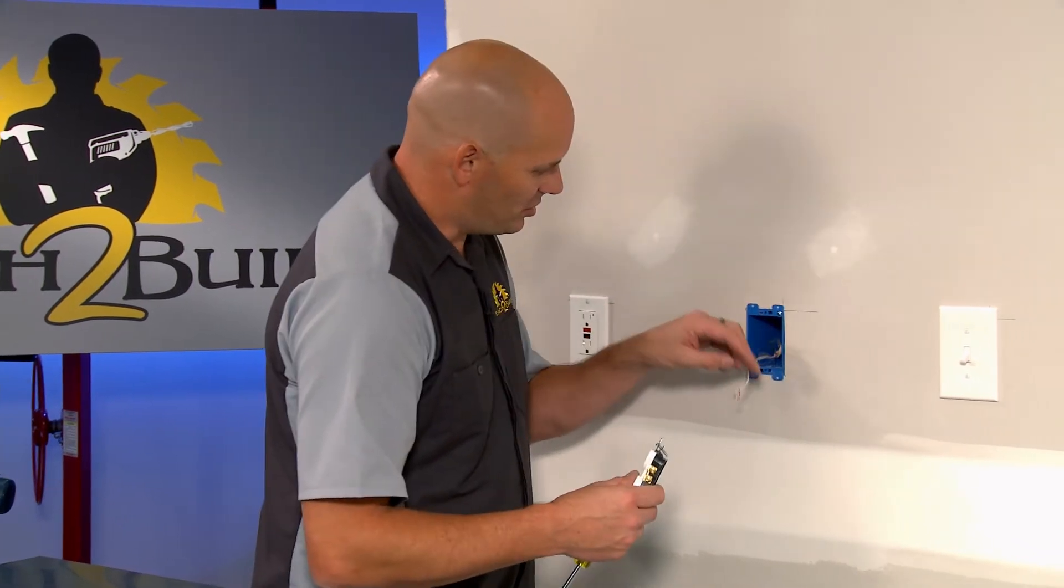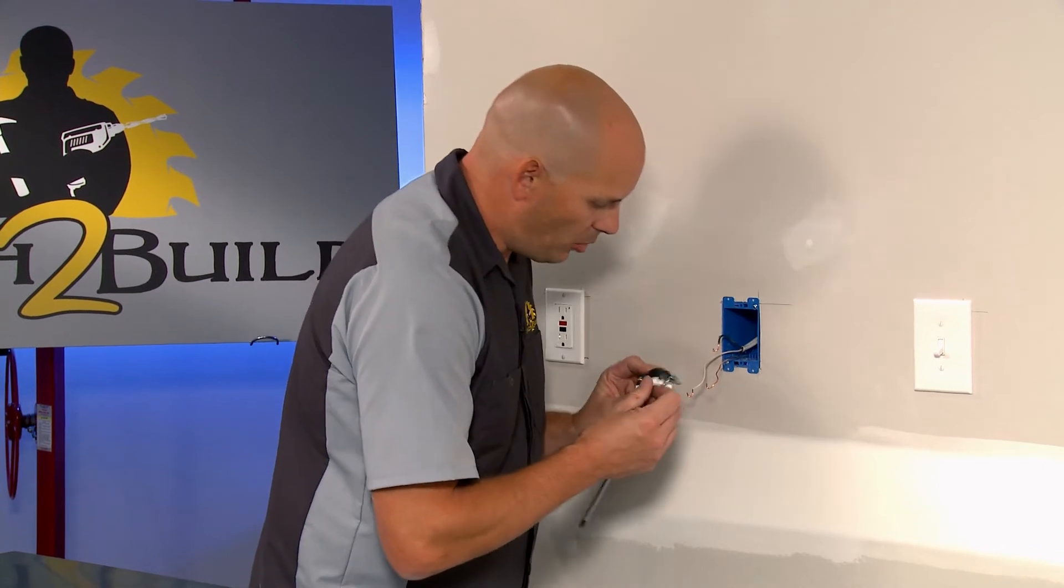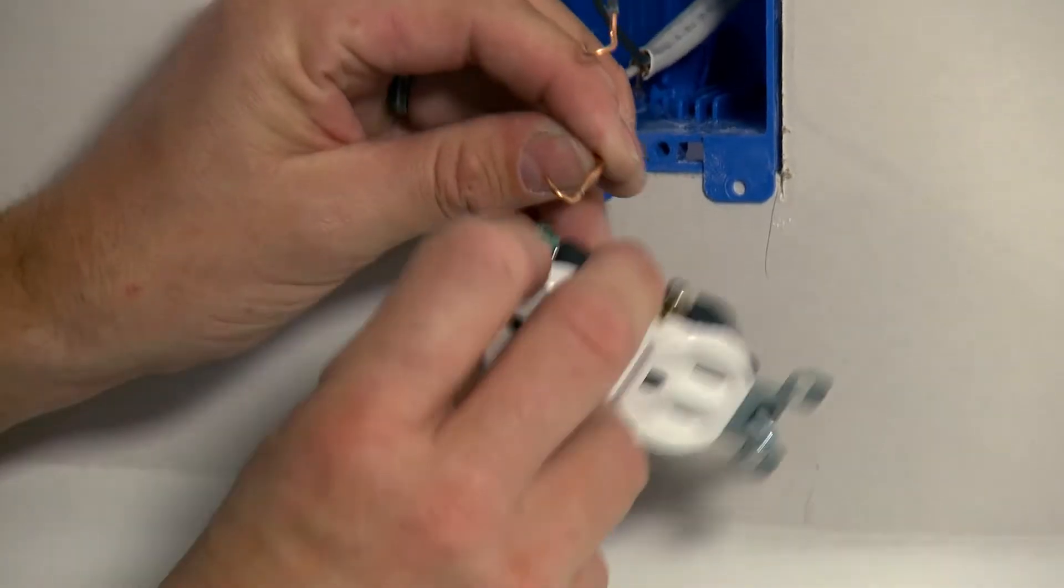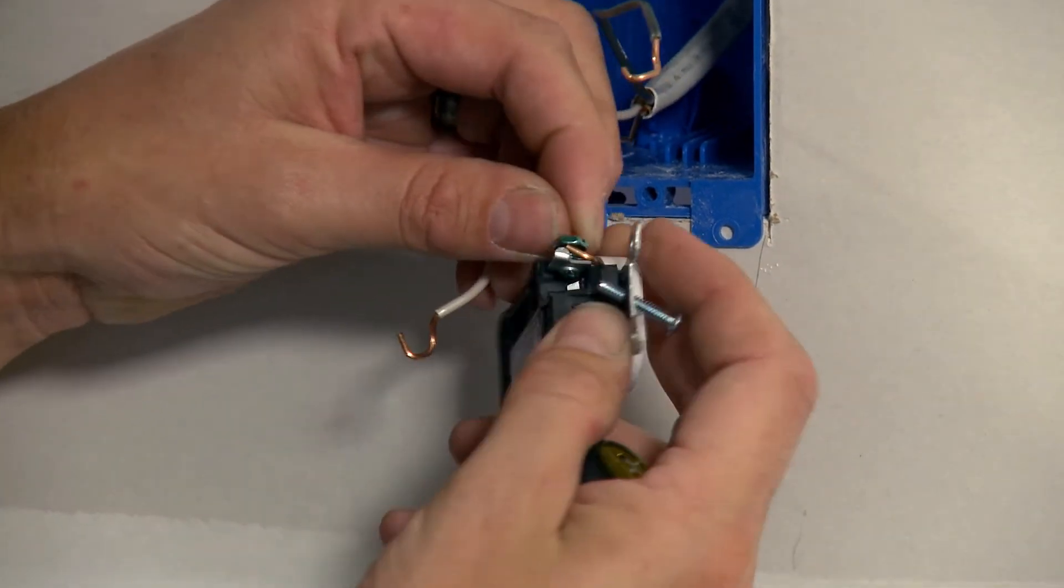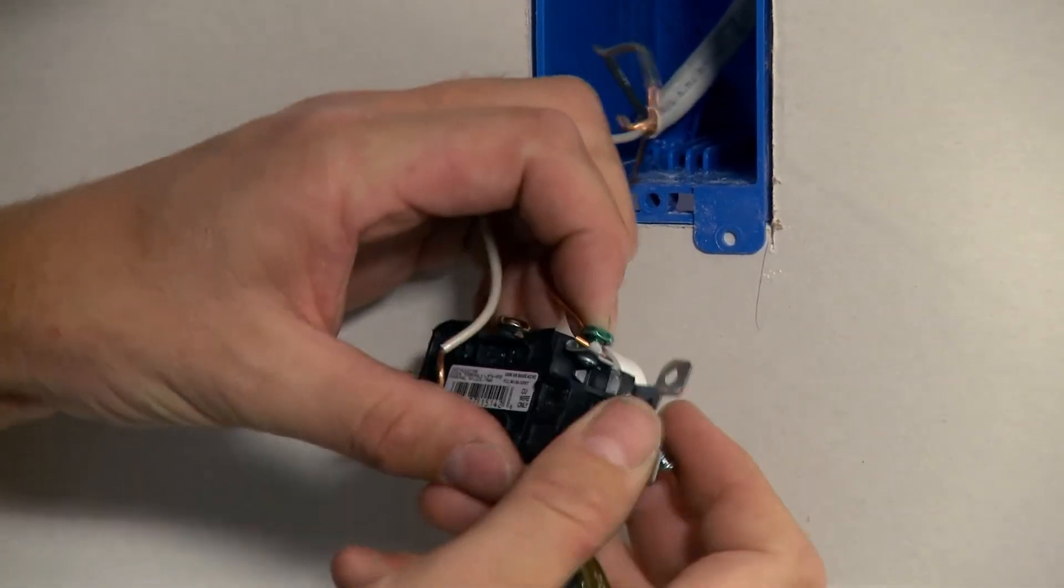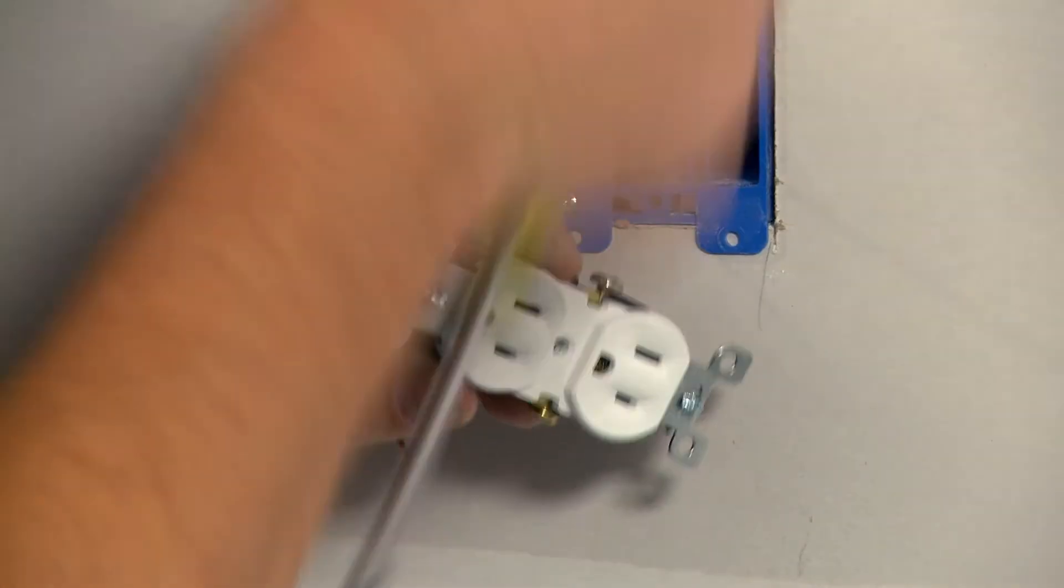So basically, we're going to reinstall this guy just like it was. Make sure it's good and ready. Run a solid test on it. Be good to go. More out of habit than anything else, I'm going to install the ground first. Once again, I'm just trying to lock the wire in there. There's a small tab that you can put the wire up against and pry it around like so.